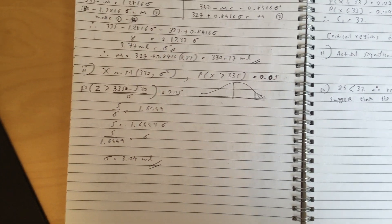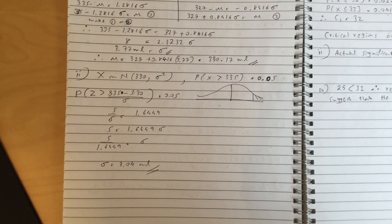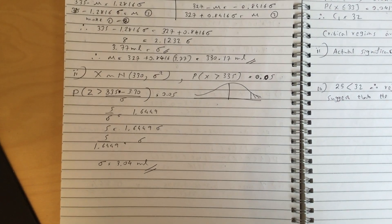For part 2, you work out the sigma to be 3.04. Part 2 is easier than part 1.